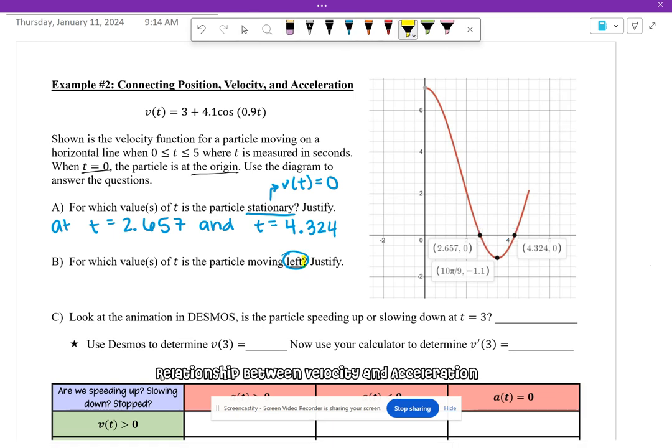So the graph is moving left for this whole interval. So the way that we would express that is we would just write the interval from 2.657 < t < 4.324. And we always want to justify because velocity is negative.